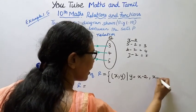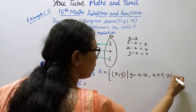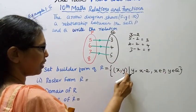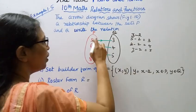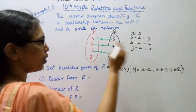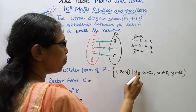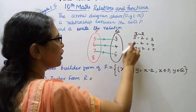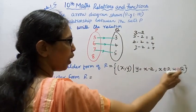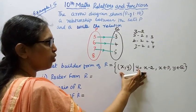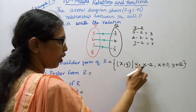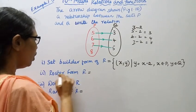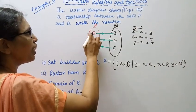X belongs to P: {5, 6, 7, 8}. Y belongs to Q. Y equals X minus 2. So the set builder form of R is: {(X, Y) such that Y equals X minus 2, X belongs to P, Y belongs to Q}.